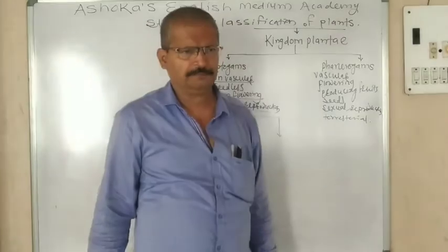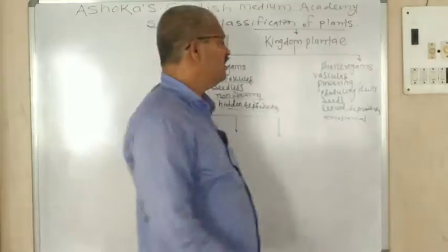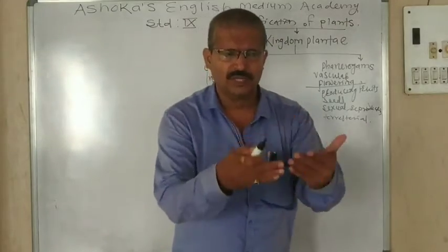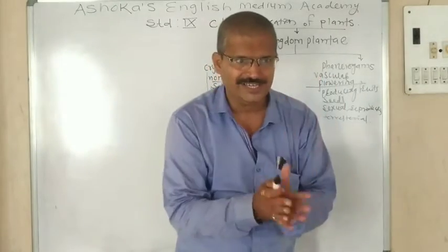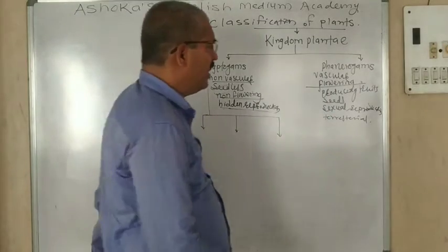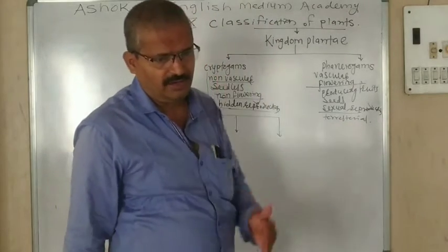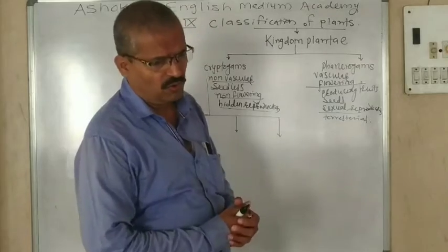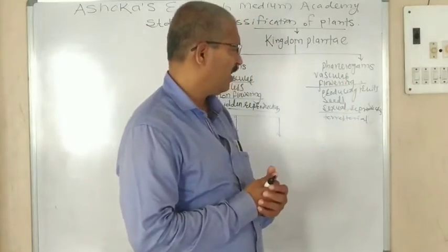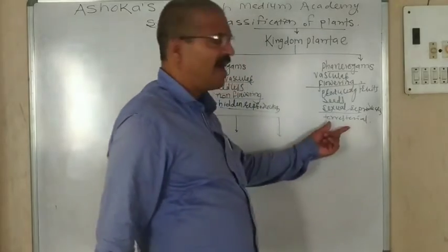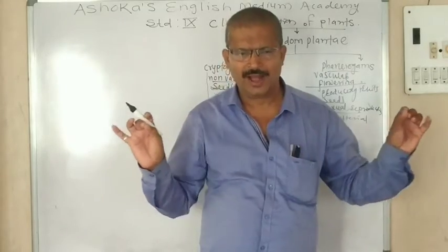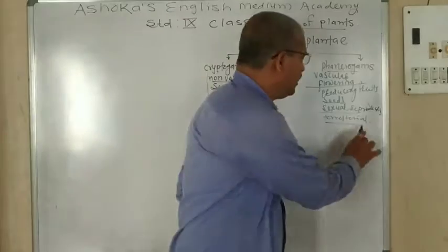The second group is Phanerogamae. In case of Phanerogamae, these plants produce flowers, produce fruits, produce seeds, and they have their own sexual reproductive system. These are seed-bearing plants, as opposed to the seedless Cryptogamae. Most Phanerogamae plants are living on land.